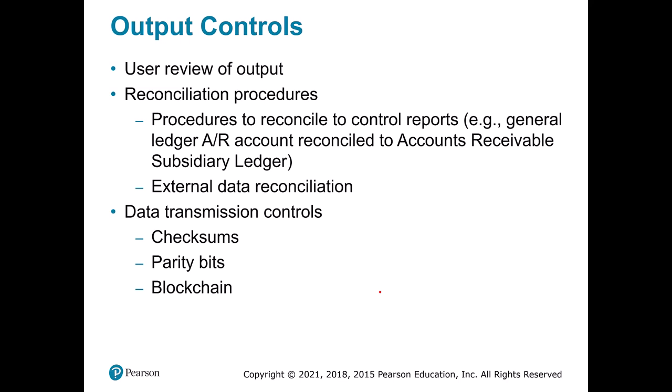For output controls, one basic idea is user review — similar to a receipt you get at the grocery store, where you check that all the items are listed. We also have reconciliation procedures, making sure that control accounts like the general accounts receivable account match the specific subsidiary ledgers for each company we expect to receive money from. External data reconciliation is also really important — for example, making sure your cash balance in your accounting records matches the cash balance at the bank. If those two match, you're in good shape; if there's an error, you want to investigate.